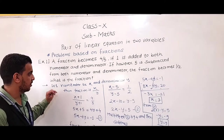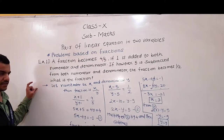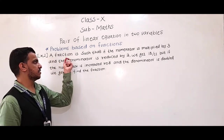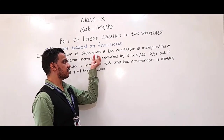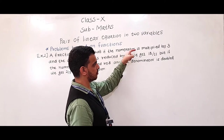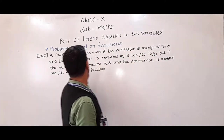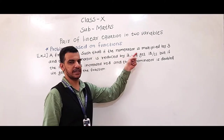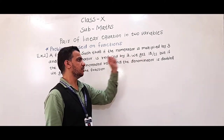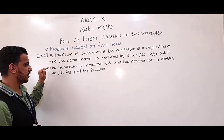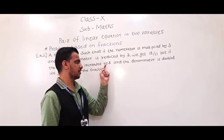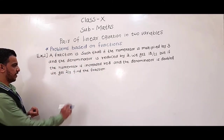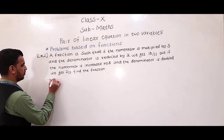Understand this one. Now we will take the second example. A fraction is such that if the numerator is multiplied by 3 and the denominator is reduced by 3, we get 18 by 11. But if the numerator is increased by 8 and the denominator is doubled, we get 2 by 5. Find the fraction.